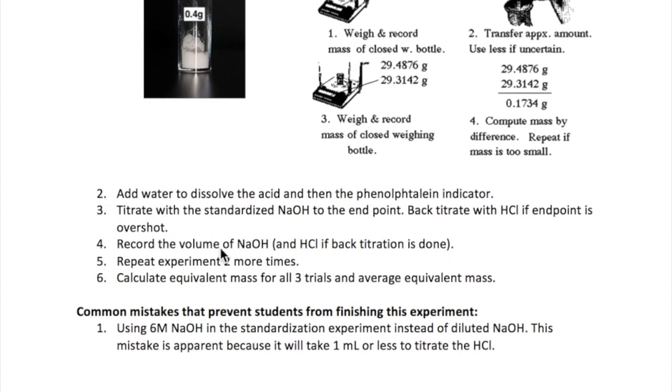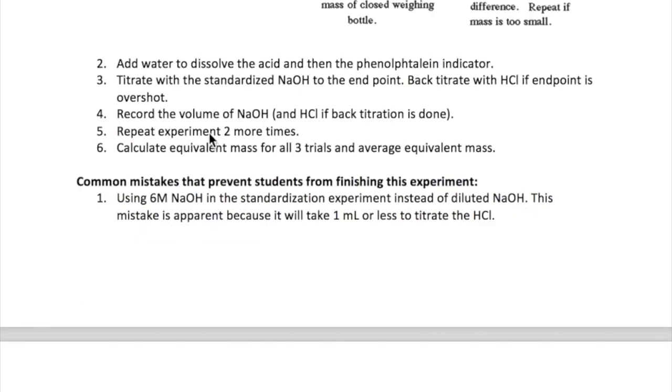If you overshoot the endpoint, do a back titration with the HCl that you use in Part A. Repeat the experiment two more times to get a total of three trials. Then use your data to calculate the equivalent mass for each trial and the average. If you forget how to do this, watch video one again.